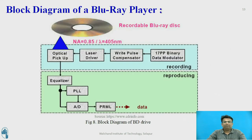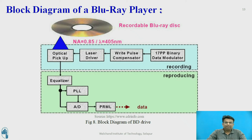The block diagram of the Blu-ray player consists of an optical pick-up driven by a laser driver. User data is modulated by a 17PP binary data modulator and given to a write pulse modulator, which creates a multipulse signal to drive the laser. The laser guides the optical lens and records the information. The reproducing unit consists of an equalizer, phase-locked loop (PLL), analog-to-digital converter, and PRML.